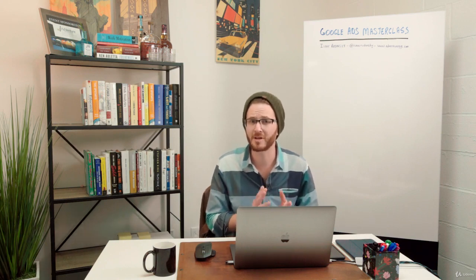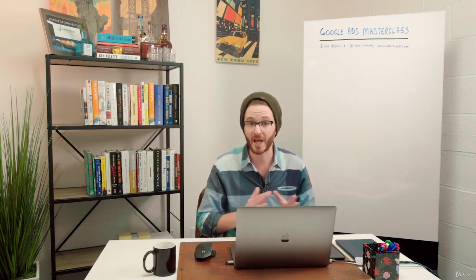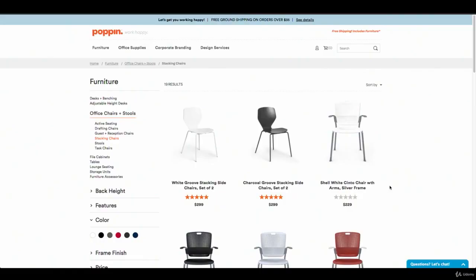And there's a lot of search volume. I know from my own research, and we'll talk about keyword research in a future lecture, but I know that there's a lot of volume for these different types of chairs. So I want to make sure that I can have a separate ad group for each one of these different types of chairs. So I want to have an ad group for task chairs and an ad group for stools. And if that's the case, I'm going to need to have a campaign just for office chairs.